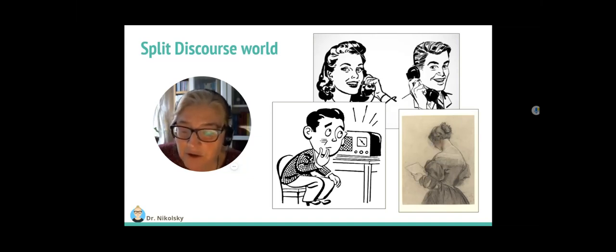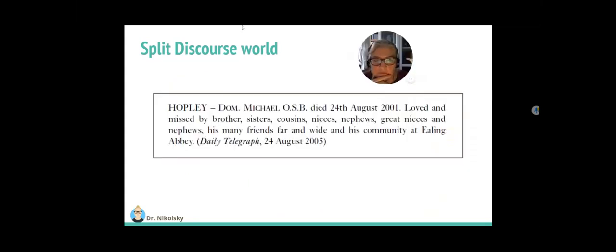This disjunction means that certain comprehension aids available to participants in the here and now of face-to-face communication, such as intonation and gestures that were used in the sandwich shop, for example, are either inaccessible or irrelevant in the split discourse world. In spite of the willfulness to communicate on both sides, the narrowness of information could disturb the understanding of the communication in split discourse world, more even than the face-to-face communications that we saw above. Gavins brings the following example to illustrate this difficulty. Hopley, Dom. Michael OSB died 24th of August 2001. Loved and missed by brother, sisters, cousins, nieces, nephews, great-nieces and nephews, his many friends far and wide in his community at Healing Abbey. Daily Telegraph, August 24th 2005.